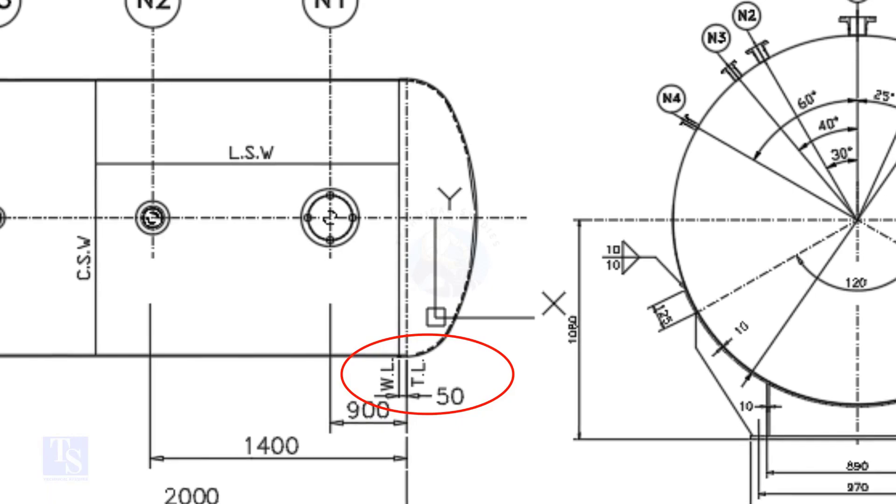What is TL and WL? TL stands for tan line and WL stands for weld line. The surface between the TL and the WL is called SF or straight face. Here, the straight face is 50 millimeters.